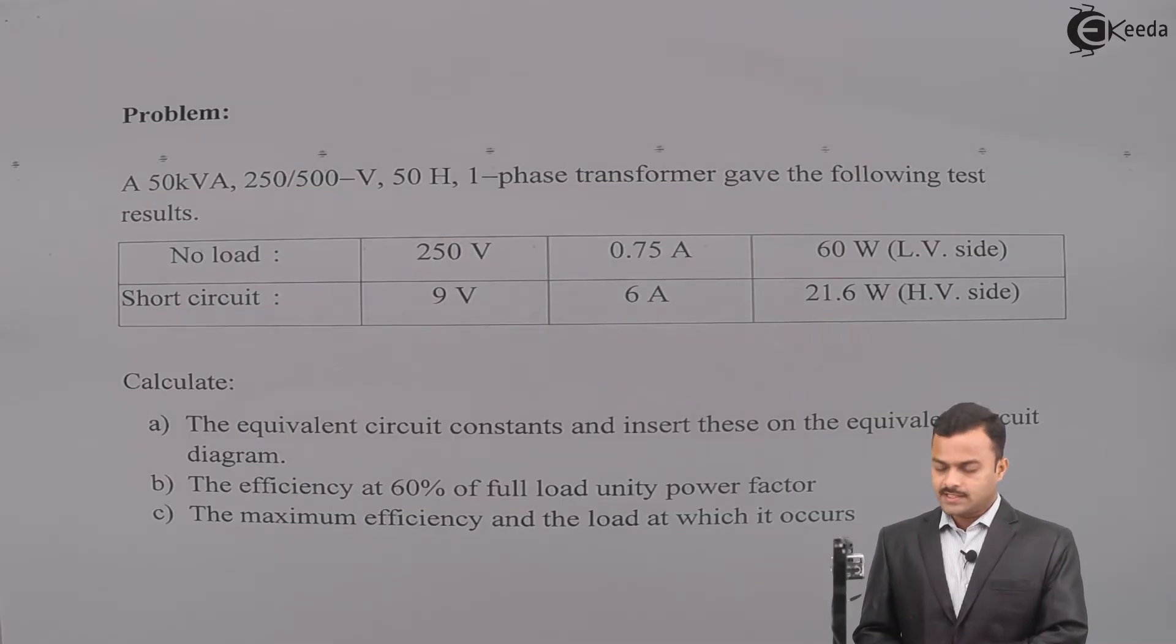Short circuit: 9 volt, 6 ampere, 21.6 watt, performed on HV side. Calculate the equivalent circuit constants and insert these on the equivalent circuit diagram.